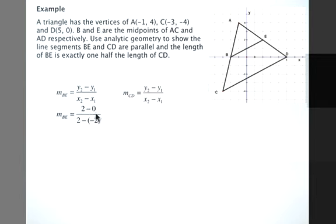So y2 is 2, y1 is 0, x2 is 2, x1 is negative 2. 2 minus 0 is 2, 2 minus negative 2 is 4. 2 over 4 reduces to a slope of 1 half for BE.